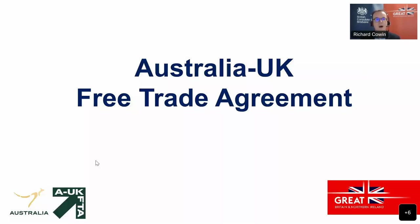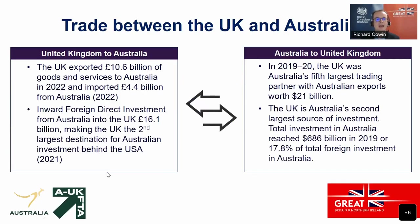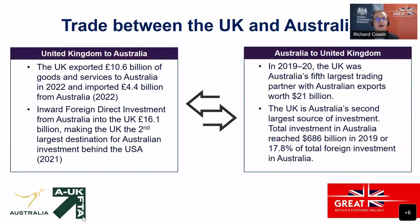A quick overview of trade and investment between the UK and Australia: the UK exported about £10 billion of goods and services to Australia in 2022, and imported about £4.4 billion from Australia over the same period. Our trade together is worth about £15 billion — around 30 billion Australian dollars — which is pretty significant for both countries. We are also very large investment partners: foreign direct investment from Australia to the UK totals $16.1 billion, making it the second largest destination behind the USA. The UK is also the second largest source of investment in Australia.